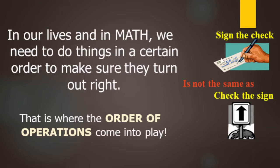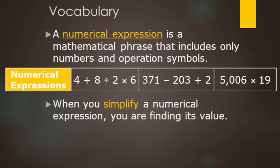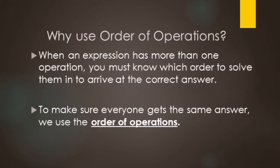Quick example: the phrase 'sign the check' is different than the phrase 'check the sign' because we changed the order of the words. Before we get into it, let's look at some vocabulary. Numerical expressions have numbers and operations. When we simplify a numerical expression, we are finding its value. We do want to be using order of operations so that we get the correct answer — and to make sure everybody gets the same correct answer.